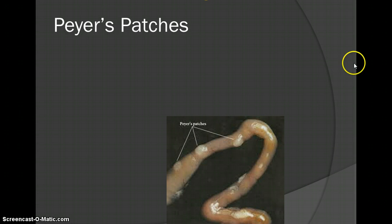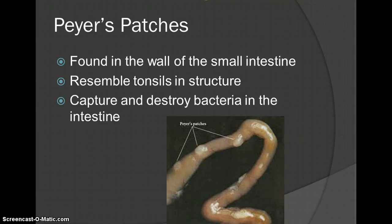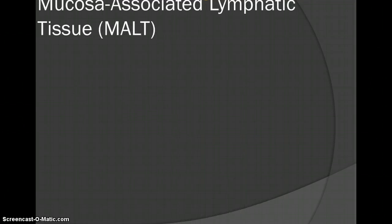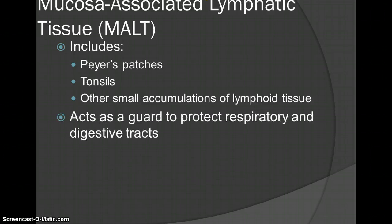Peyer's patches are found in the wall of the small intestine. They're these little patches of lymph tissue that resemble tonsils, and their job is to capture and destroy bacteria in the intestine. The last one is mucosa-associated lymphatic tissue, or MALT. It includes all the stuff we just talked about: Peyer's patches, tonsils, and other accumulations. Its whole job is to guard the respiratory and digestive tracts. And that is where we're going to stop for now.